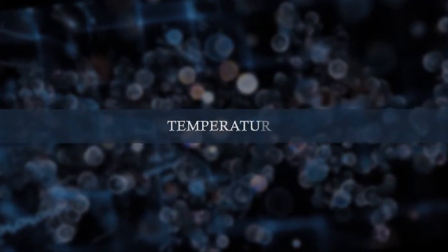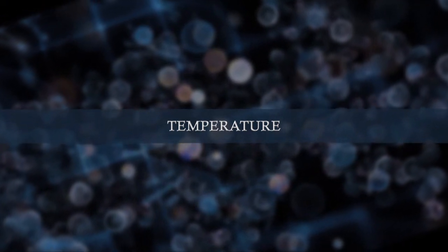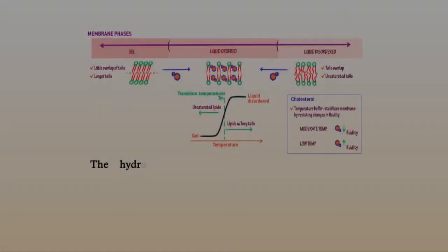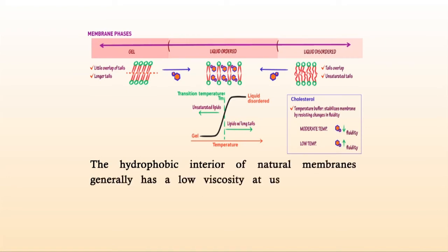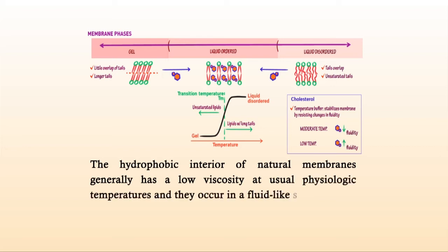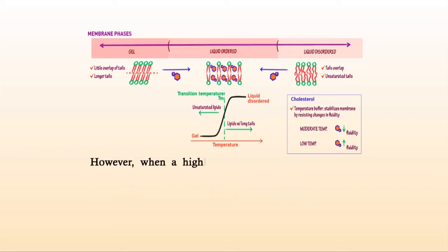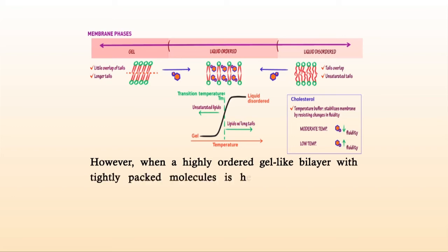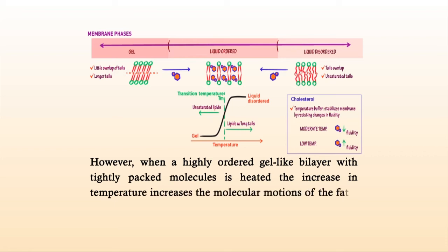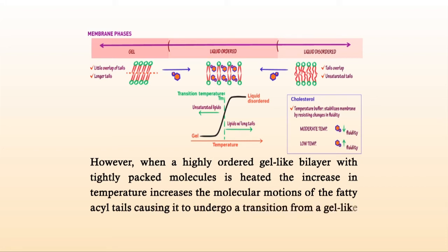The third factor is temperature. The hydrophobic interior of natural membranes generally has a low viscosity at usual physiologic temperatures and occurs in a fluid-like state. However, when a highly ordered gel-like bilayer with tightly packed molecules is heated, the increase in temperature increases the molecular motions of the fatty acyl tails, causing them to undergo a transition from a gel-like state to a more fluid-like state.